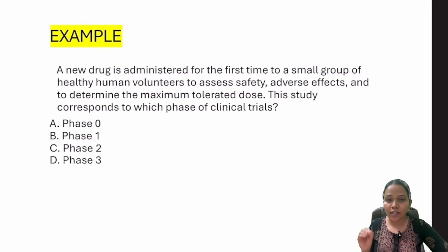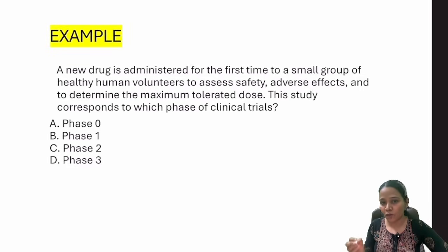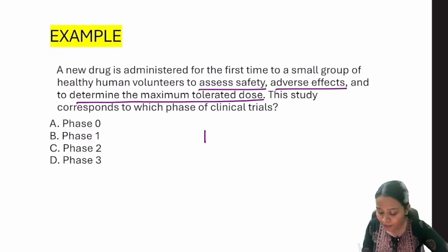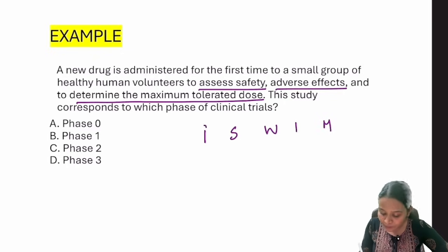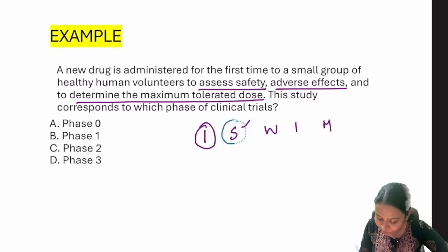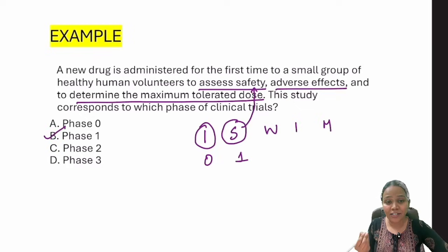Let's solve an MCQ in real time: 'A new drug is administered for the first time to a small group of healthy human volunteers to assess safety, adverse effects, and determine the maximum tolerated dose — which phase is this?' First, write down I SWIM. 'I' means Phase 0, which involves micro dosing — I don't see micro dosing mentioned here.